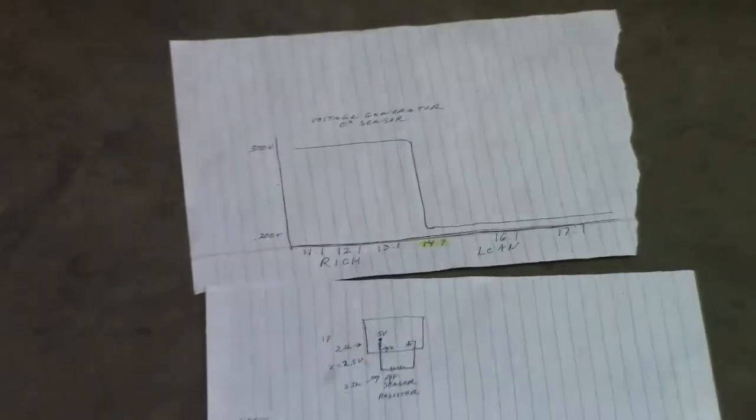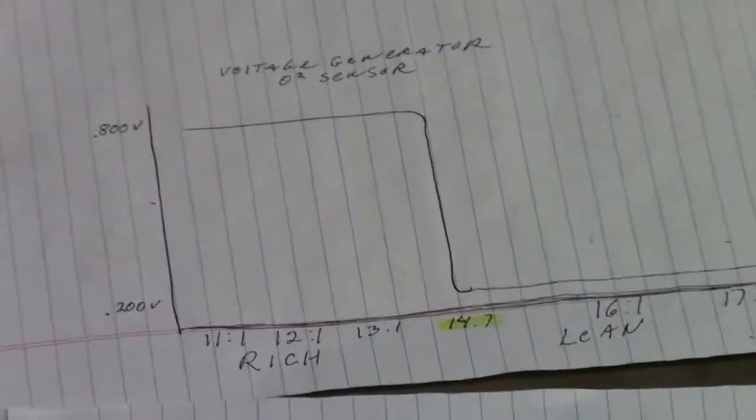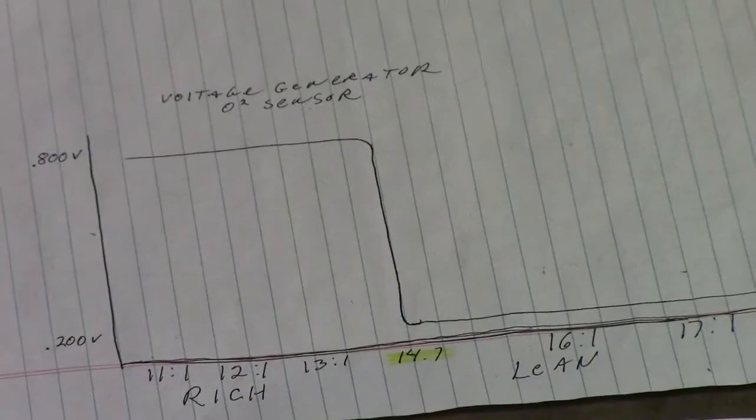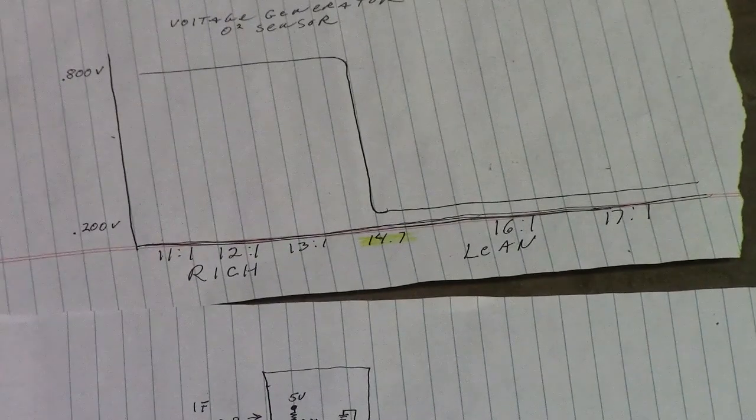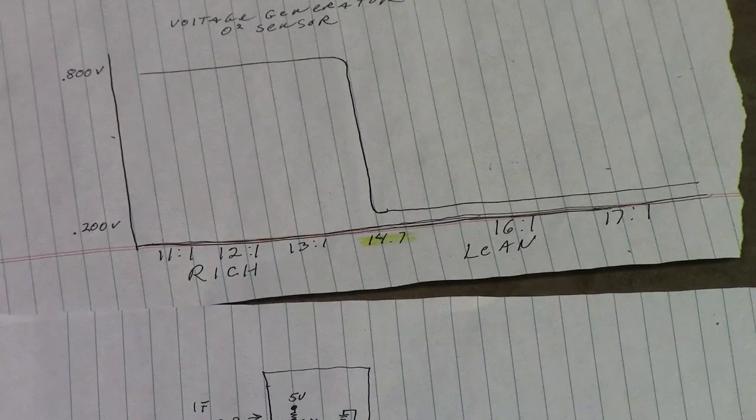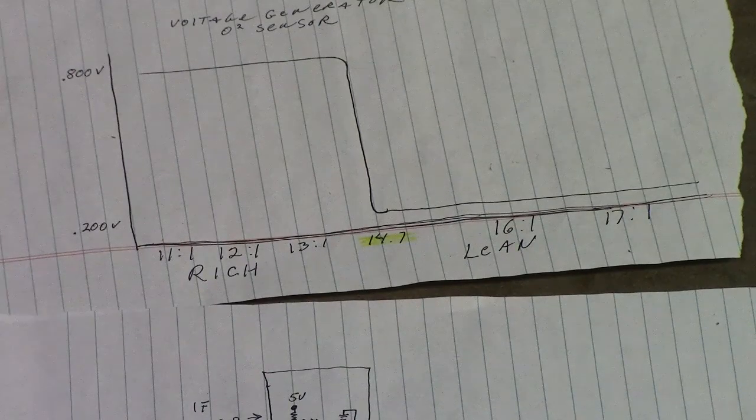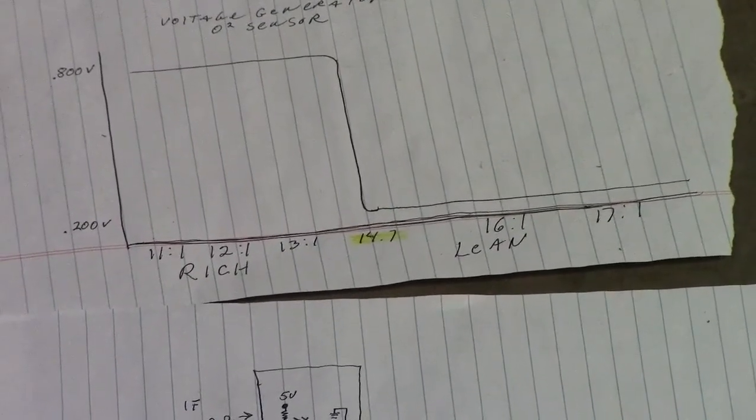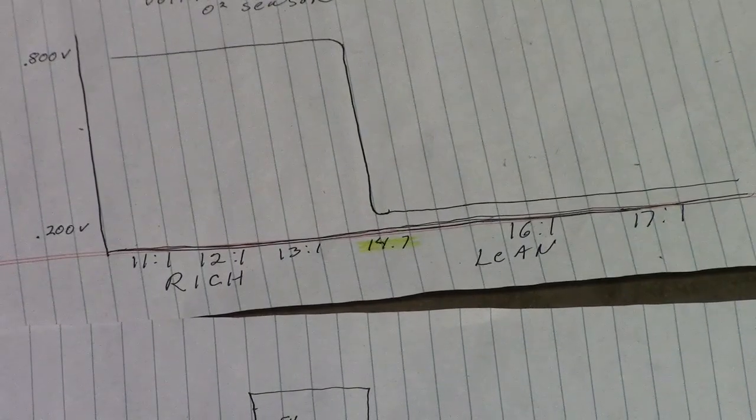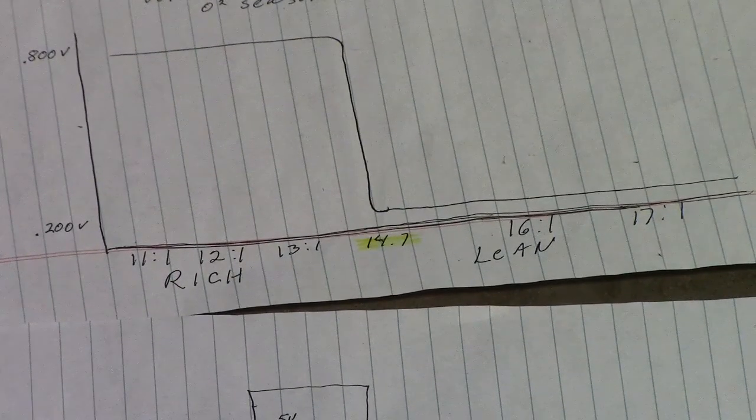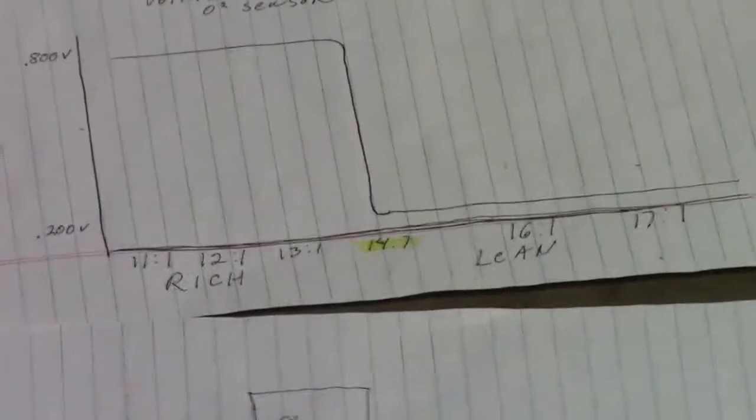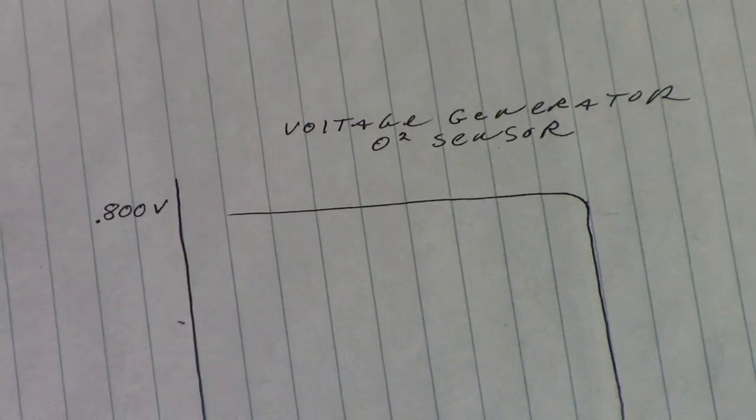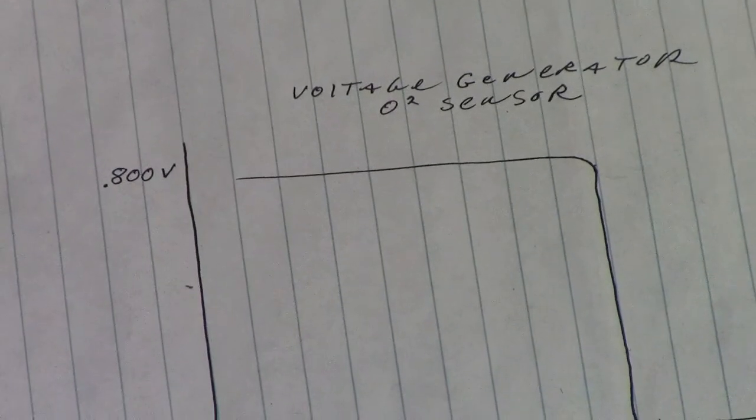The difference between oxygen sensors and air fuel ratio sensors is shown on this voltage chart. The oxygen sensor has the ability only to measure 14.7 to 1 air fuel ratio. It does not know the difference anything above or below it, but it is a yes or no signal. On this chart you can see 11 to 1, 12 to 1, 13 to 1, and 14.7 to 1. At 14.7 to 1, this oxygen sensor will either make 200 millivolts or 800 millivolts. At 800 millivolts or 0.8 volts, the system's considered rich. At 200 millivolts, the system's considered lean.